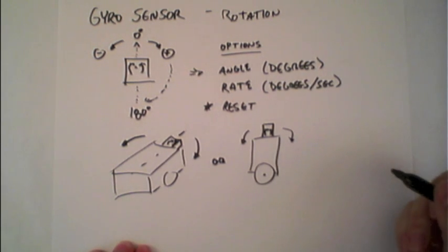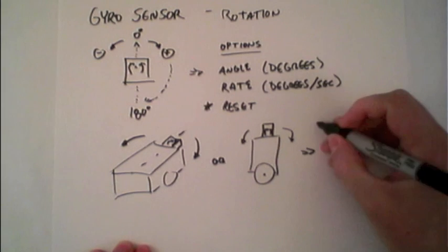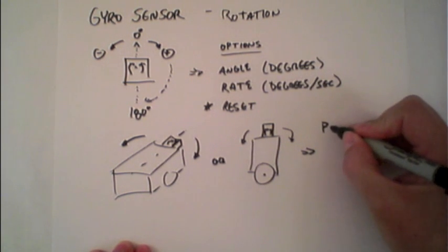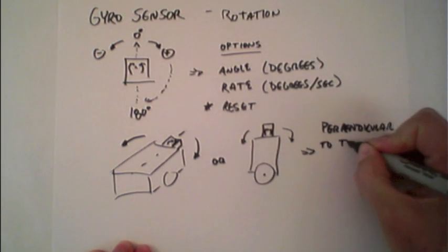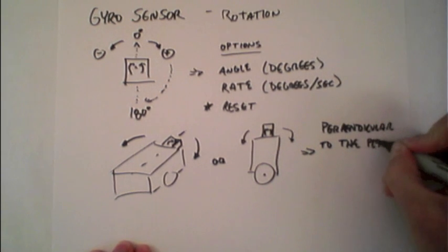In both of these cases, you can see that the gyro sensor is positioned perpendicular to the plane of rotation.